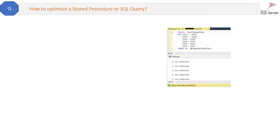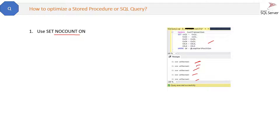When you run an INSERT or UPDATE query in SQL Server, you see messages like 'one row affected'. Inside a stored procedure, there is no need to show these messages because they occupy some memory. One way to optimize is to set NOCOUNT ON at the top of your procedure — it will suppress those row-count messages.